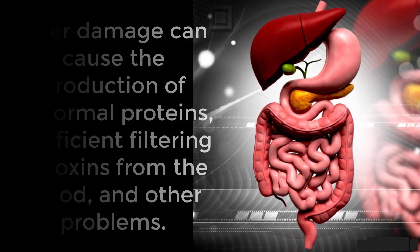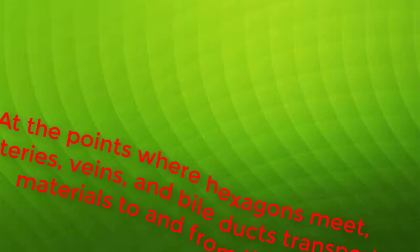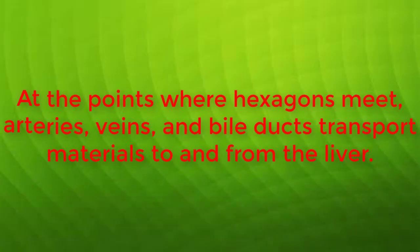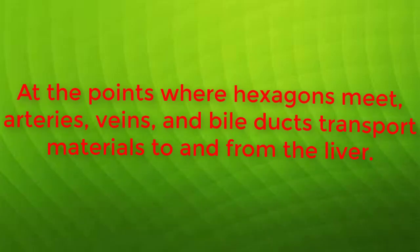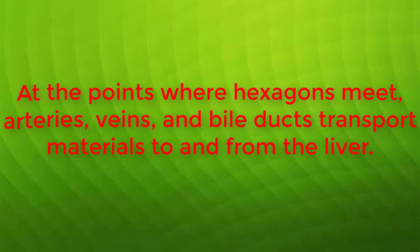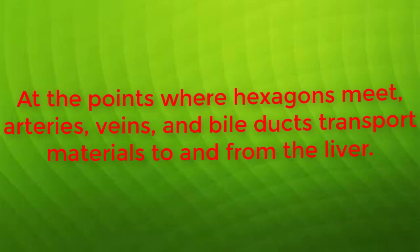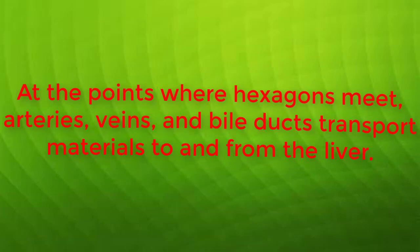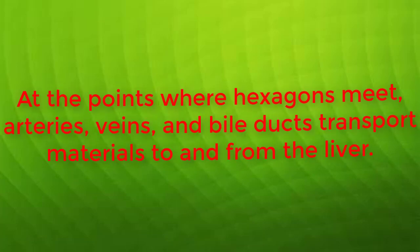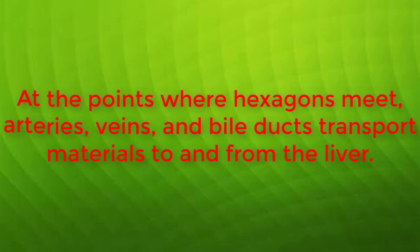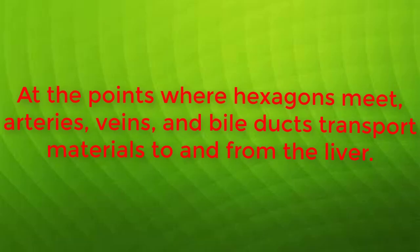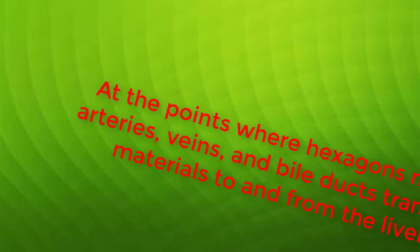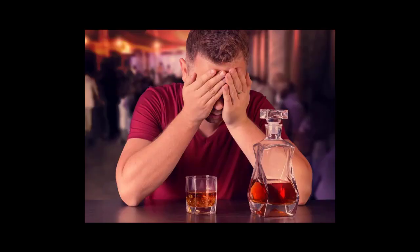Individual hepatocytes grow in roughly hexagonal units called lobules. Each lobule is arranged around a central vein, with a framework of cells around it. At the points where hexagons meet, arteries, veins, and bile ducts transport materials to and from the liver.